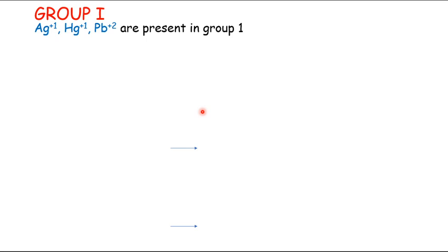Now our second group — which is named group one. As we discussed earlier, we had formulated a trick: group one is a huge party. Ag positive, mercury monovalent, and lead divalent — 'Aaj huge party.' This is a memorizing trick to remember the ions of group one.